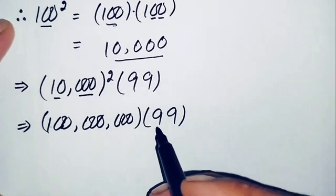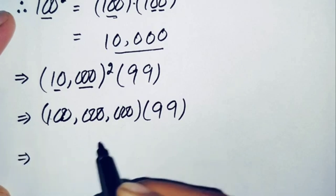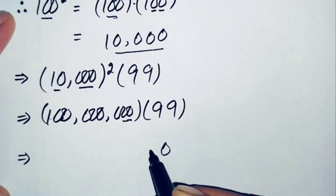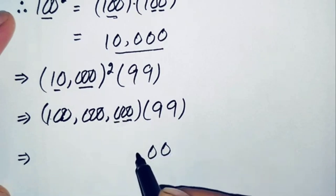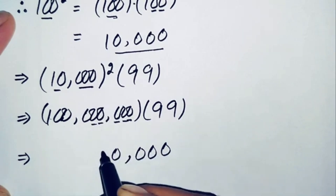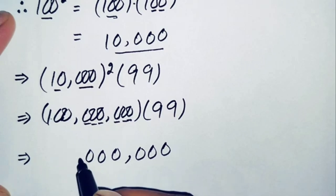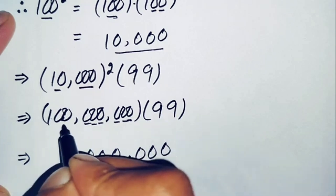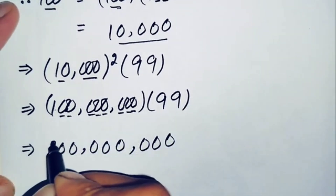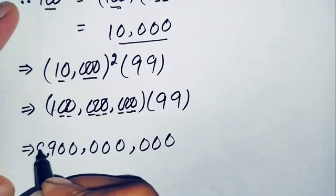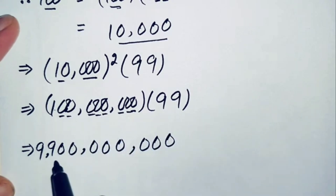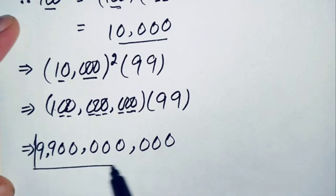Now we multiply 100 million by 99. Since 100 million has eight zeros, multiplying by 99 is straightforward: the result is 9,900,000,000, which is 9 billion 900 million.